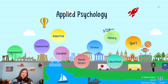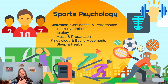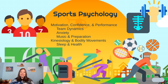Our last area of applied psychology we're going to talk about in this unit — but not the last to exist — is sports psychology. Sports psychology has a couple of different flavors. One is the overlap with psychology, neuroscience, and kinesiology: understanding how our bodies work, how our joints, muscles, and nerves fire, and understanding what can lead to the best physical training.